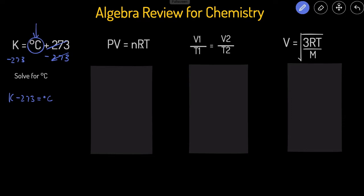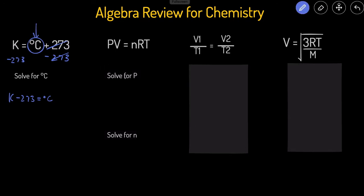Next we have PV equals NRT, which is the ideal gas law — something you'll see a lot in the gas section. The first problem is to solve for P, so we have to isolate P by getting rid of its neighbor V. You can see that P is currently being multiplied by V, so to get rid of V we do the opposite of multiplication, which is division. We divide both sides by V, which gives us P equals NRT divided by V.